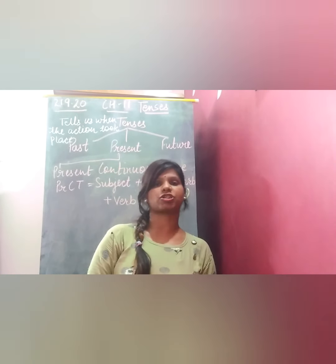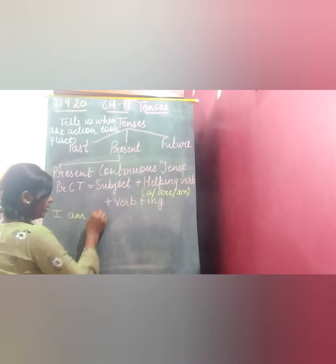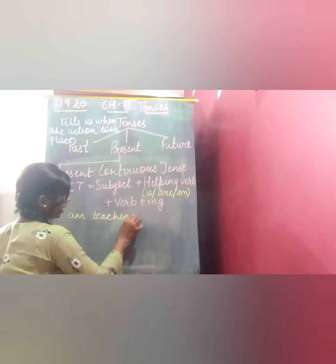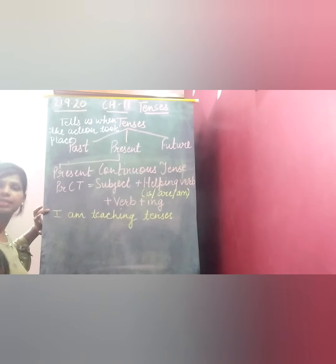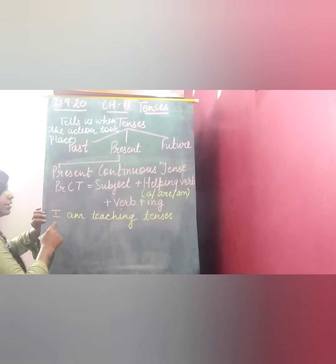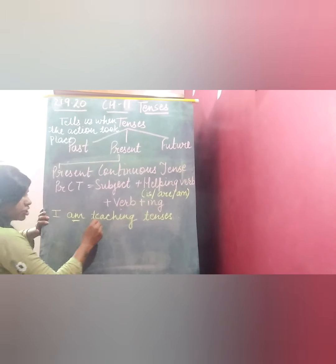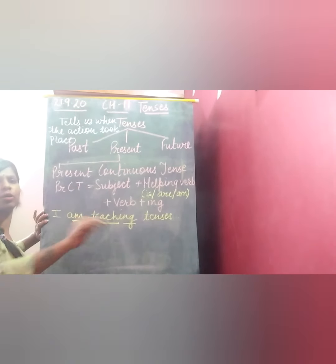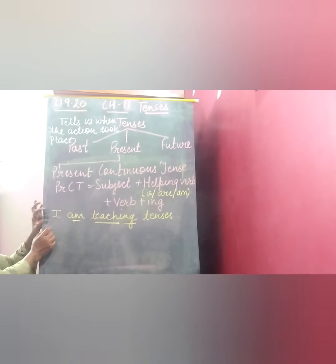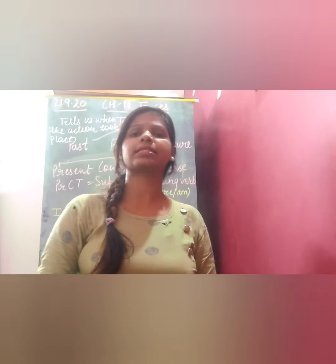Secondly, present continuous is also used for temporary habits. In the example 'I am teaching tenses': 'I' is the subject, 'am' is the helping verb, 'teach' is the verb, and 'ing' is added after it. So the structure is subject + helping verb + verb + ing, and then whatever remains of the sentence.